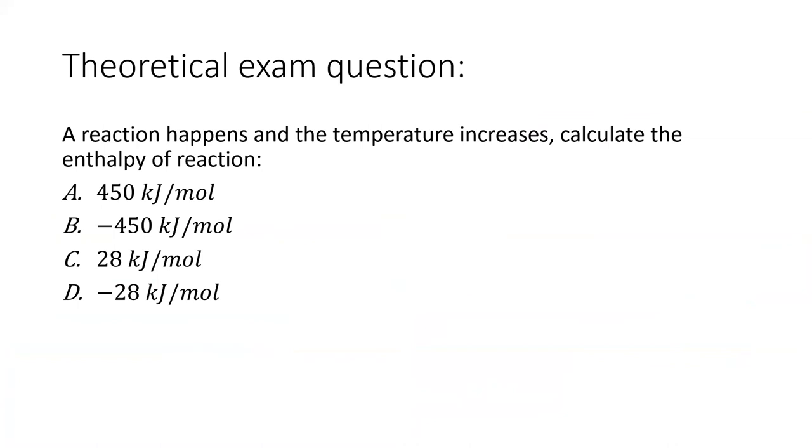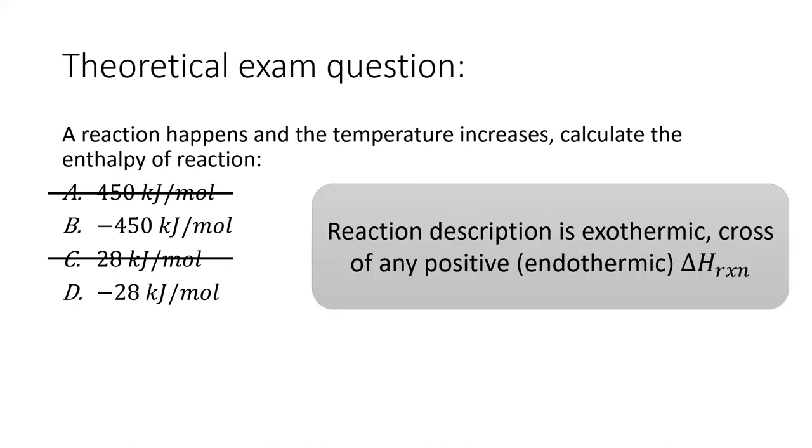For instance, in this question, it says the temperature increases during this reaction. Temperature increase during a reaction, that means exothermic, and exothermic means negative delta H. So I cross off all the positive delta H's because those would describe an endothermic reaction. Now, this doesn't get you all the way to the answer, but it will improve your odds of guessing by 50%.